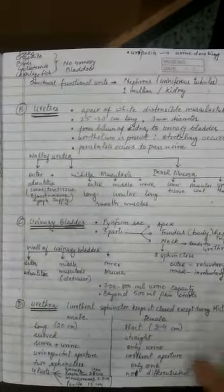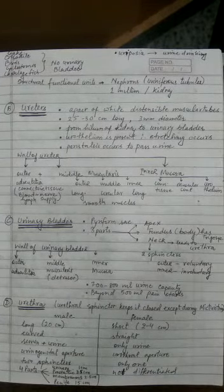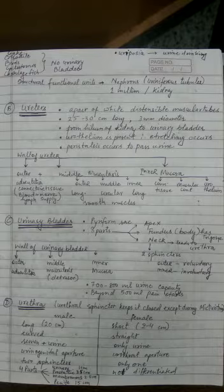We discussed the structure of ureters - they are a pair of white distensible muscular tubes which are 25 to 30 centimeters long with a diameter of just 3 millimeters.